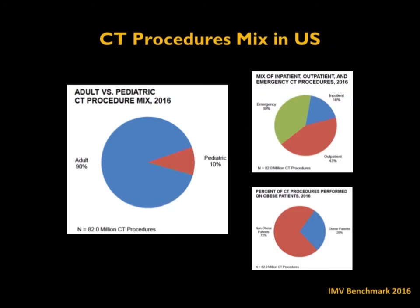What is the CT procedure mix in the US? According to recent national surveys, about 10% of all CT procedures done in the US are for the pediatric population. As of 2006, the total number of procedures was 82 million, meaning approximately 8.2 million CTs were done on the pediatric population. This 10% proportion has remained consistent over recent years, spanning inpatient, outpatient, and emergency CT procedures.